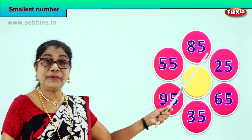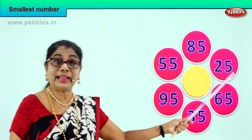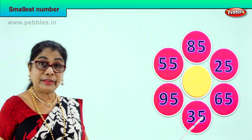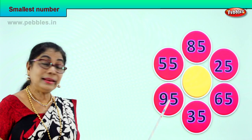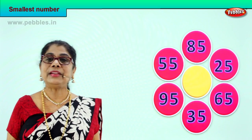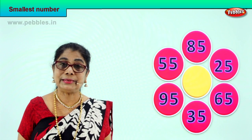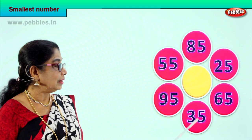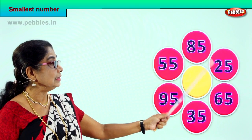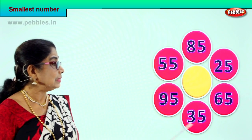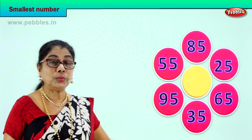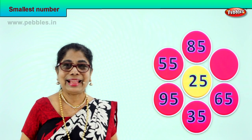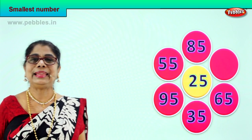85 has 8 tens, 25 has 2 tens, 65 has 6 tens, 35 has 3 tens, 95 has 9 tens, and 55 has 5 tens. Look at all the numbers carefully and find the number with the least tens. 2 tens is the least — 2 tens and 5 ones — 25 is the smallest number among all these numbers. So we put 25 in the middle. Are you happy? Did you enjoy?